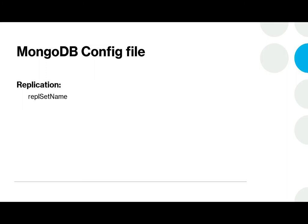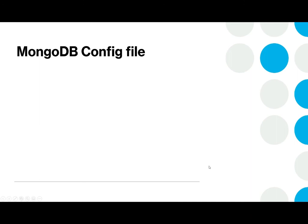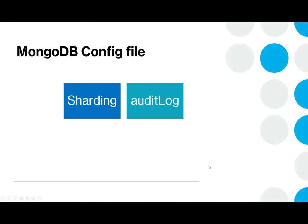Replication is another important thing. It has options like replica set name, which is a string that takes the value of the replica set name — it needs to be the same for all members of the replica set. There are other options like sharding, audit log, and SNMP, but we currently overlook these subjects in this tutorial.